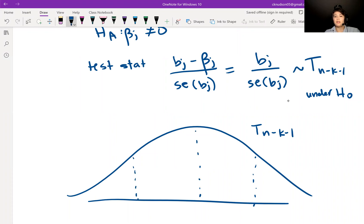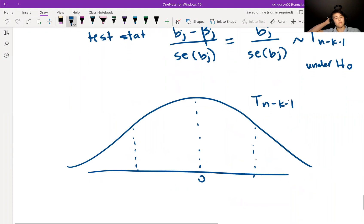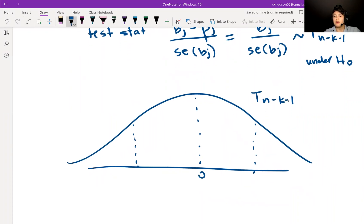We know that this T distribution is centered at zero. Then we can calculate here is maybe the absolute value of our test statistic, so we have BJ divided by its standard error and then absolute valued, and then here we have the negative absolute value.